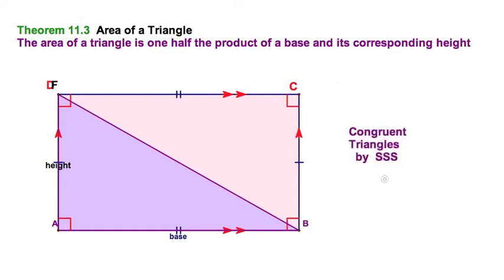I can clearly see I've got two triangles congruent by side, side, side. Because after all, this side is congruent to itself by the reflexive property. And that means that this triangle is one half of the rectangle.